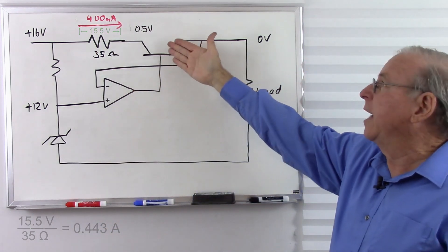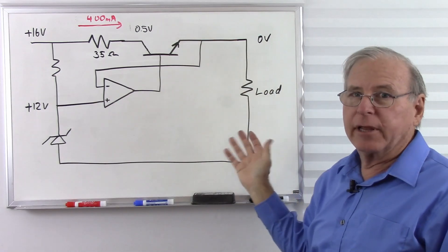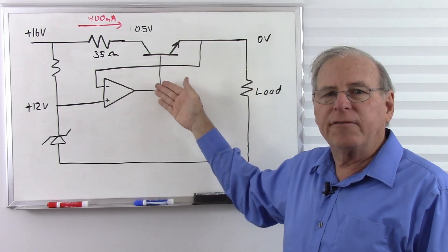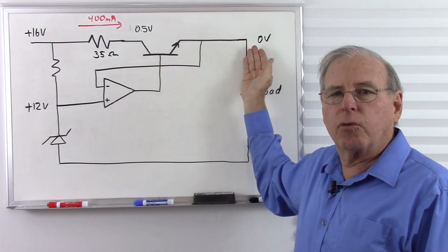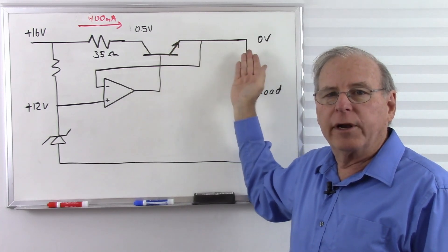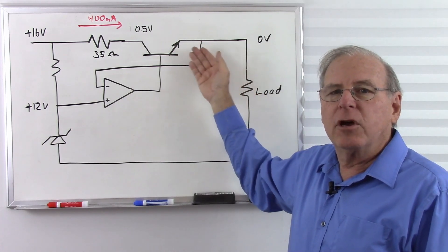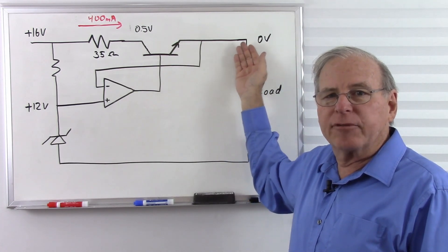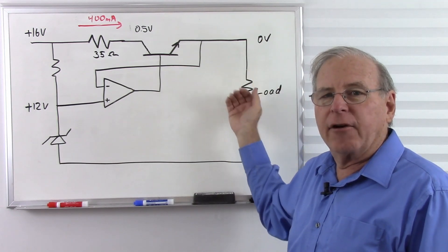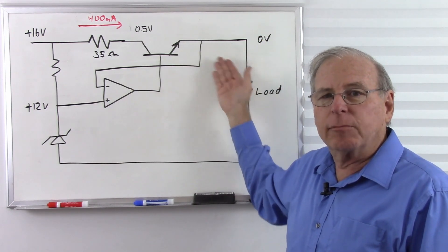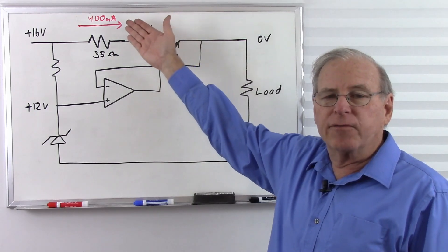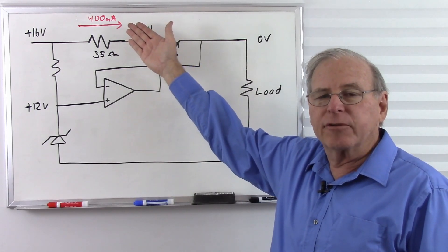So our maximum current will actually be 400 milliamps with this design. The design philosophy was to deliver 12 volts with regulation up to 100 milliamps. Once we exceed 100 milliamps the voltage starts to drop, and our absolute maximum short circuit current ends up being about 400 milliamps.